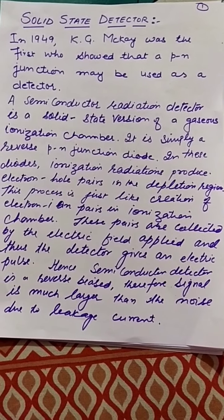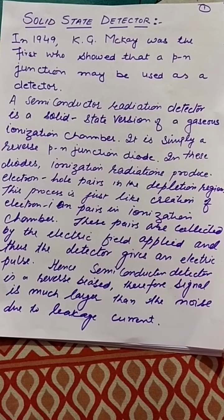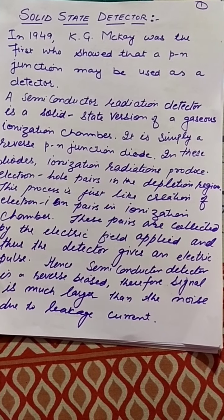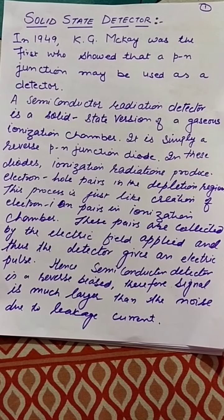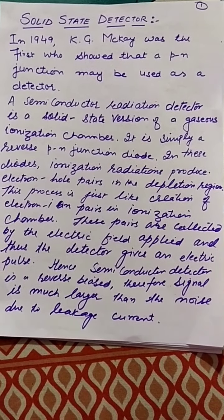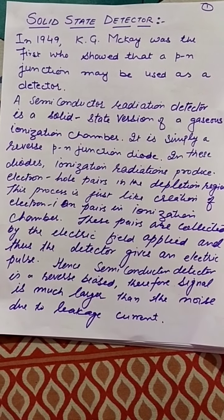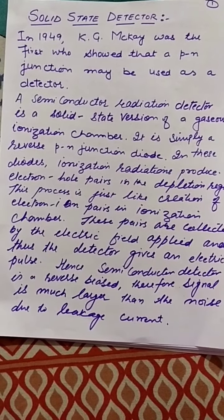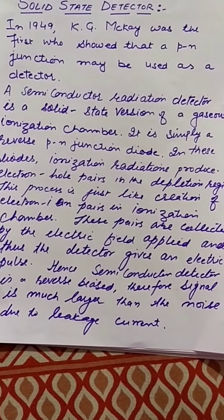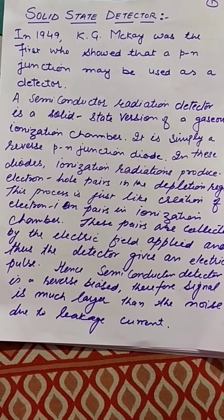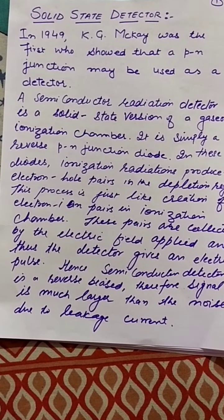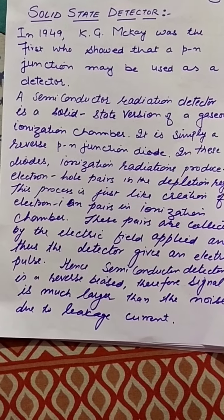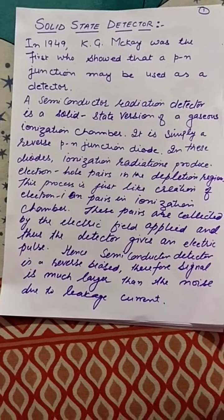Radiation semiconductor devices, the PN junction rectifier - based on that, the field of nuclear physics has been completely revolutionized with the development of semiconductor radiation detectors. In 1949, K.G. McKay was the first scientist that used a PN junction as a detector. A semiconductor radiation detector is a solid state version of a gaseous ionization chamber.